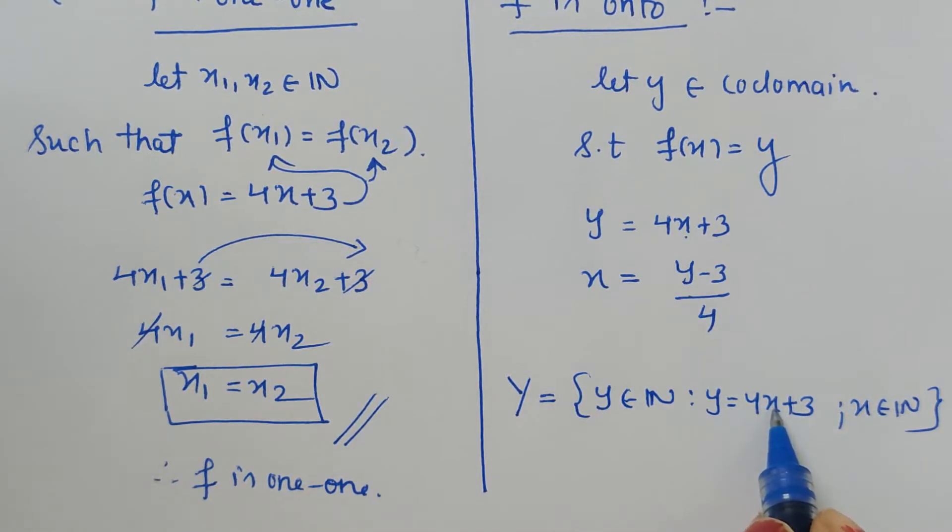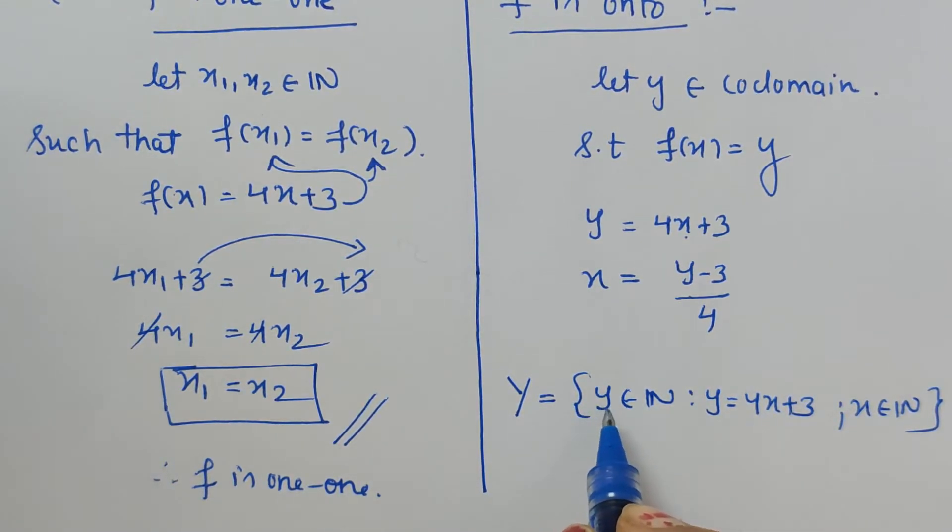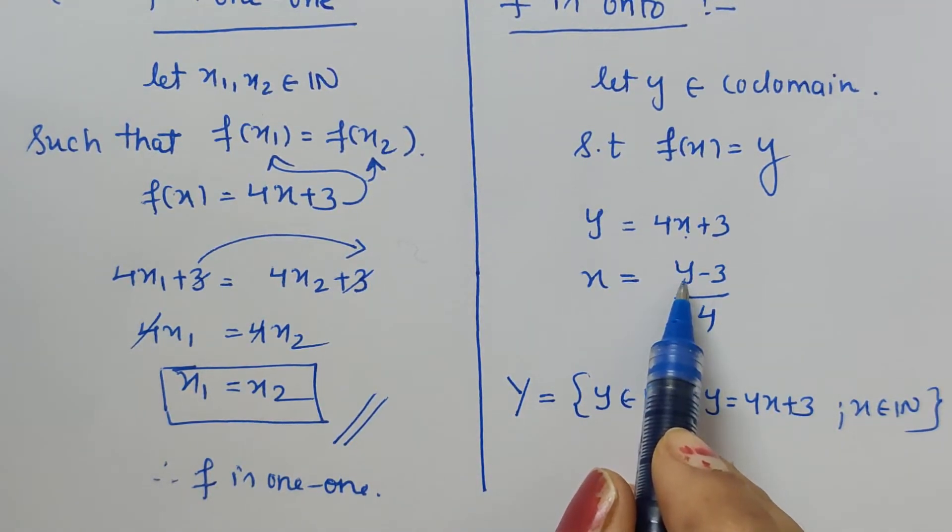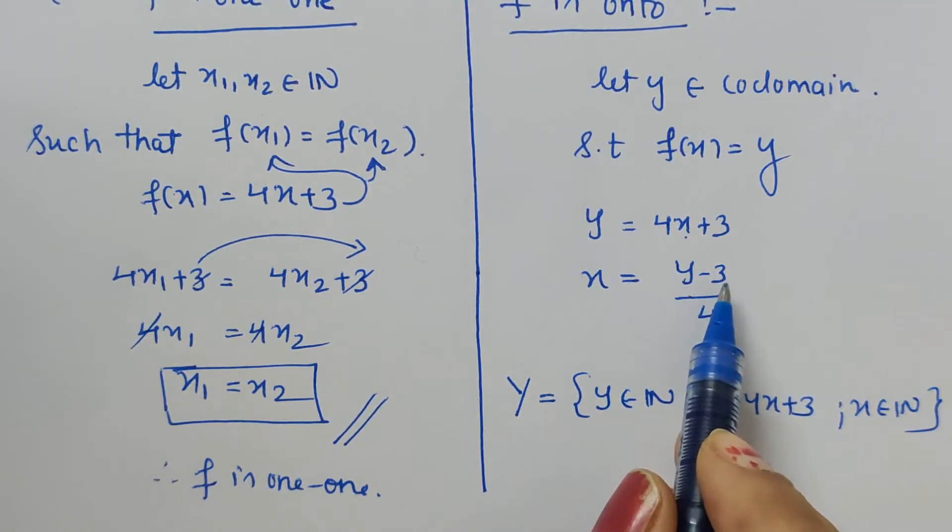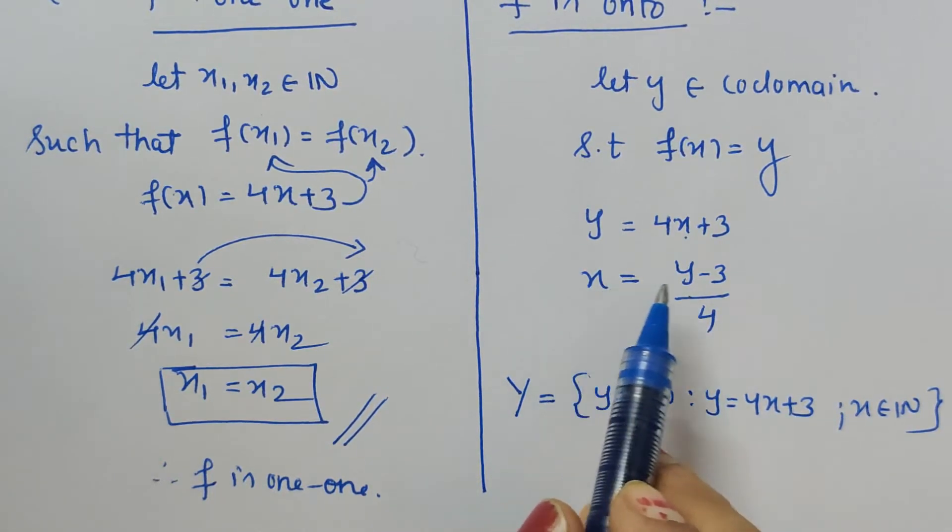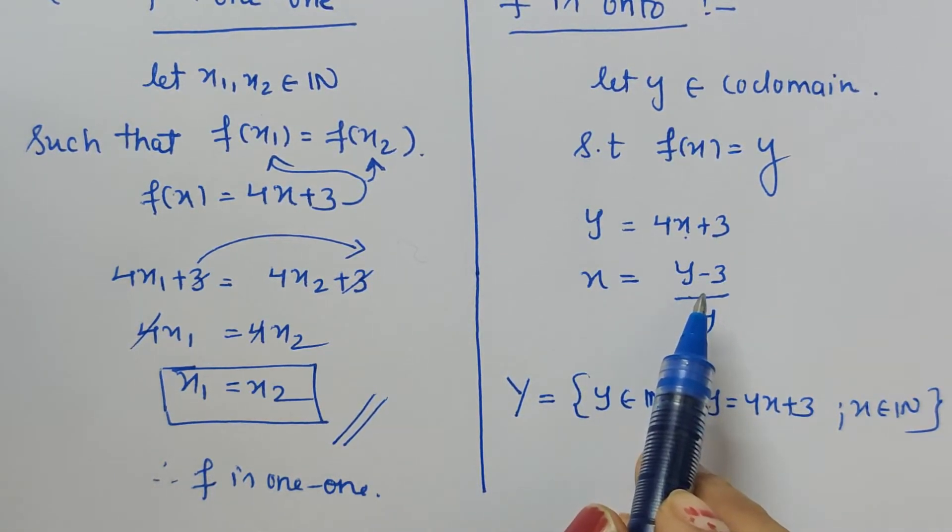So the first natural number is 1. So if I put x equal to 1 here, value of y is 7. That means the value of codomain begins from 7 and all larger numbers. So here if I start putting 7, 7 minus 3 is 4, x will be 1, isn't it? So it satisfies. So I started with putting the smallest value of the codomain, and since x exists for that value and for those values in domain, therefore we can say the function is onto.